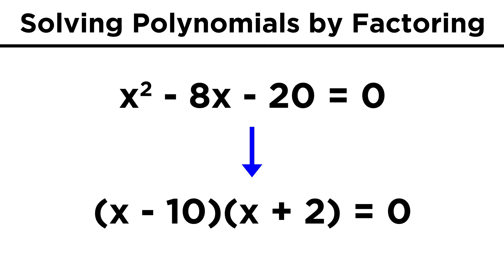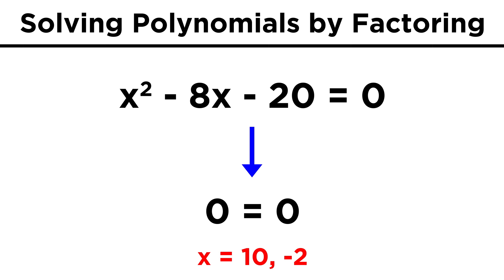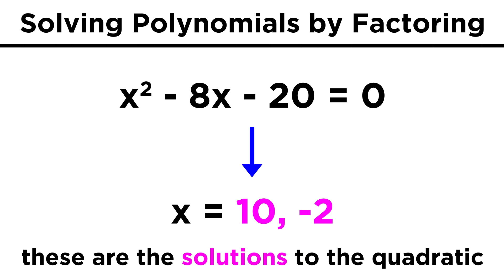The second one we did gave us (x - 10)(x + 2). By similar reasoning, either positive ten or negative two can be plugged in for x to make this equation valid, so those are the two solutions.